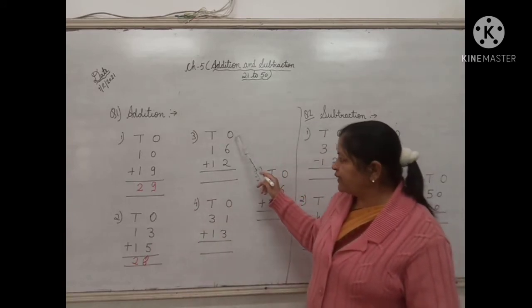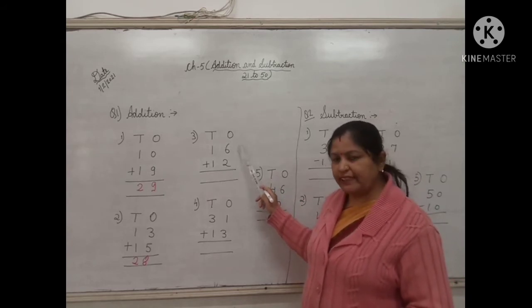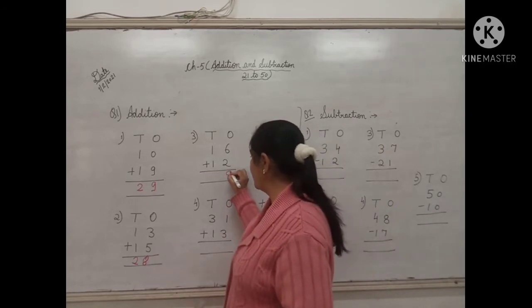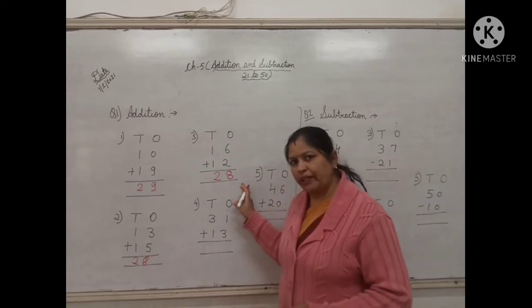Third one. In ones digit, the number is 6 and 2. So children, 6 plus 2 will be 8. And 1 plus 1 will be 2. So the answer is 28.